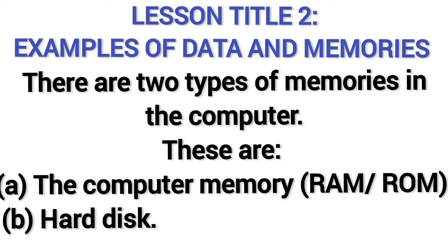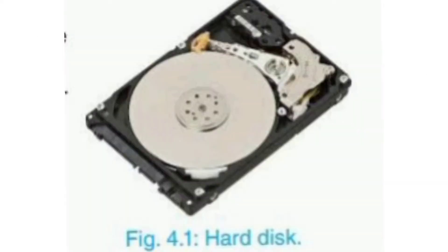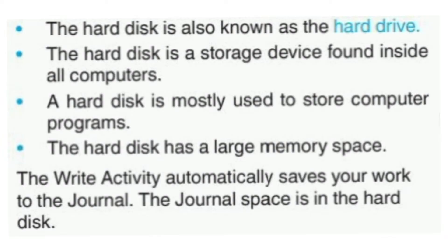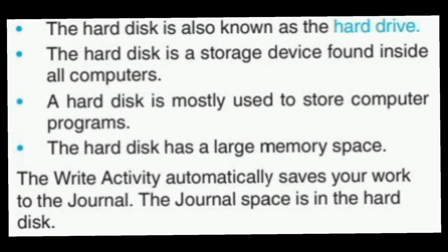There are two types of memories in the computer: the computer memory RAM and ROM, and the hard disk. Let's start by talking about the hard disk. The hard disk is also known as the hard drive. It is the storage device found inside all computers, and it is mostly used to store computer programs. The hard disk has a large memory space.